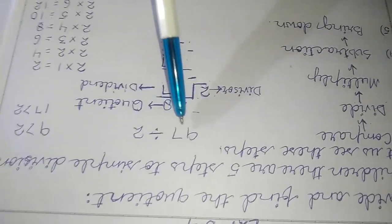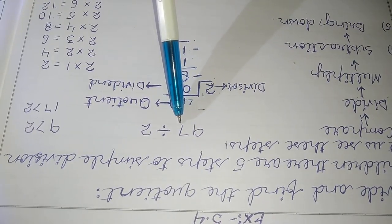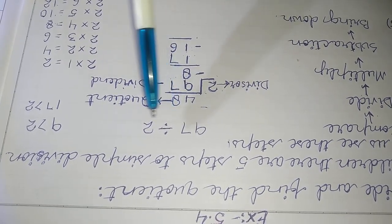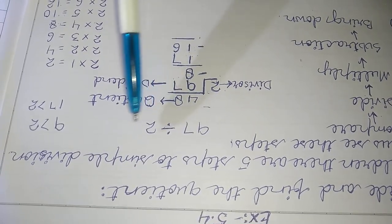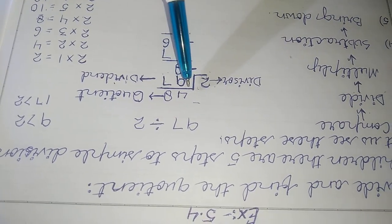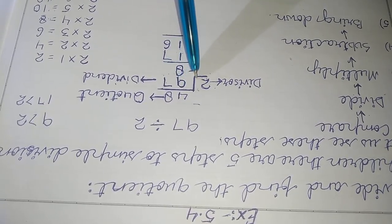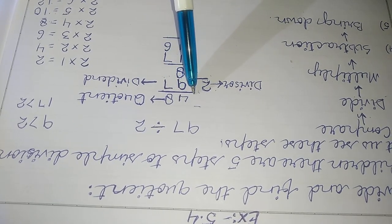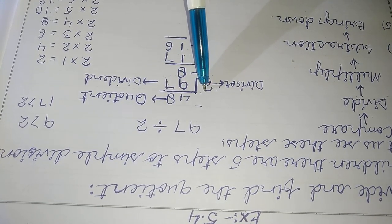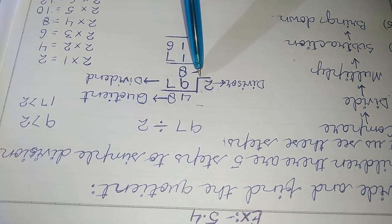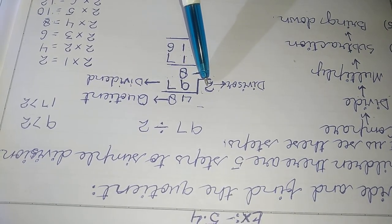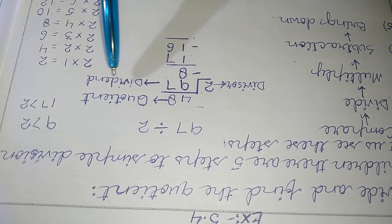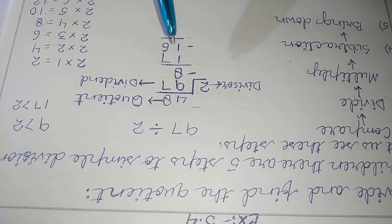Our example is 97 divided by 2. Here, 97 is the dividend, this is the division symbol, and 2 is the divisor. We will write 97 inside the tent-like structure and 2 outside it.